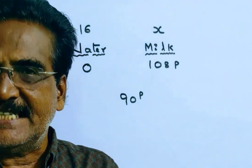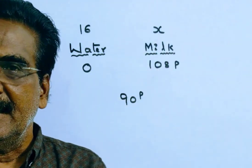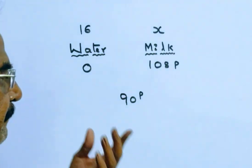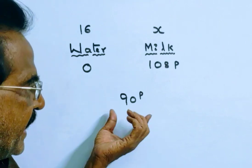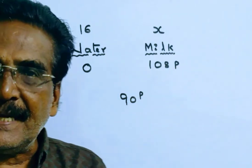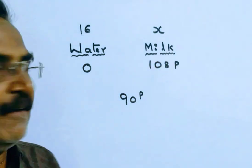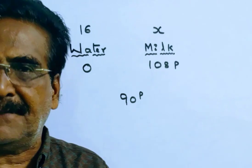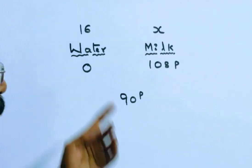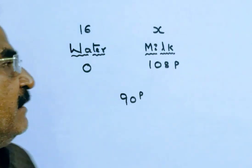It is given that the price of the mixture is 90 pies per liter, and the price of milk is 1 rupee 8 pies per liter. 1 rupee 8 pies means 108 pies per liter. Of course, the price of water is considered as zero.